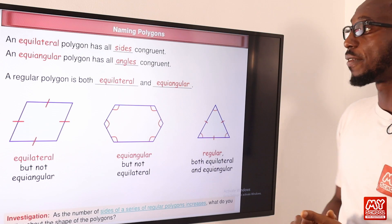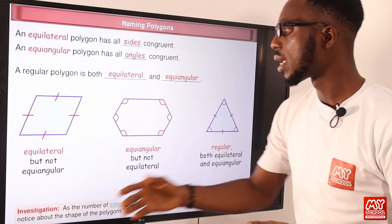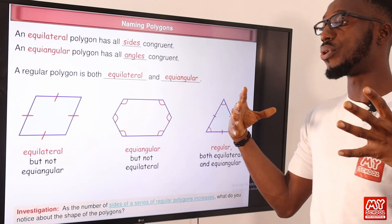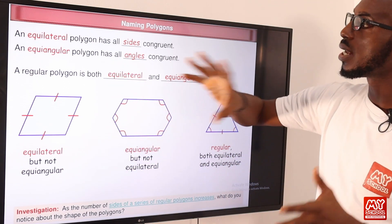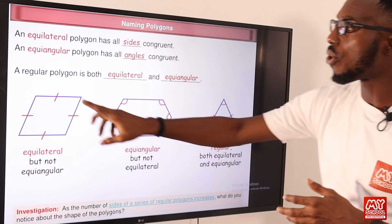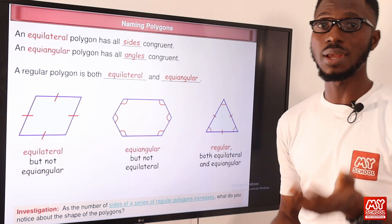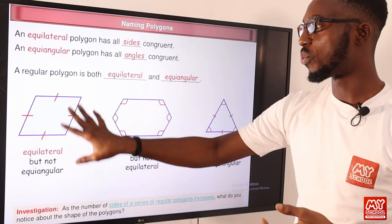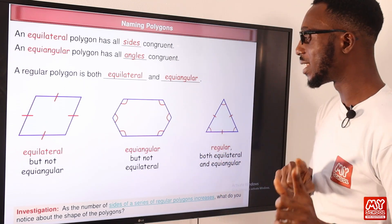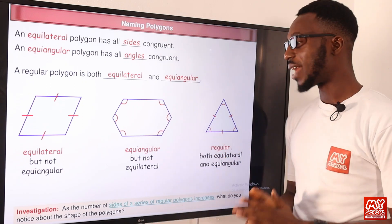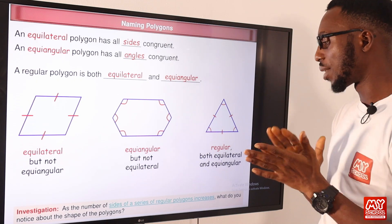A regular polygon is both equilateral and equiangular — it comprises those two concepts together. If you want to be distinct: an equilateral polygon has all sides congruent — the sides are equal — but their angles are not equal. An equiangular polygon has all its angles equal but not the sides. Then we have the regular polygon whereby all sides and all angles are equal.